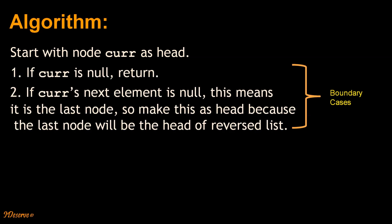We start with a node current as head. If current is null, we return. If current's next element is null, this means it is the last node, so make this as head because the last node will be the head of the reversed list.